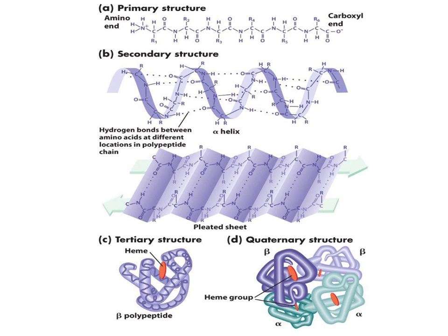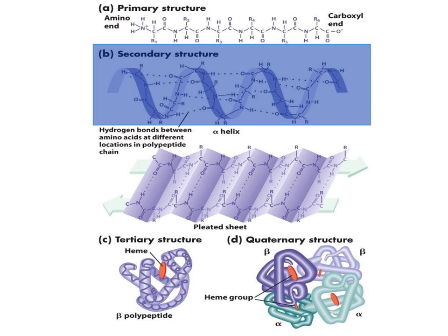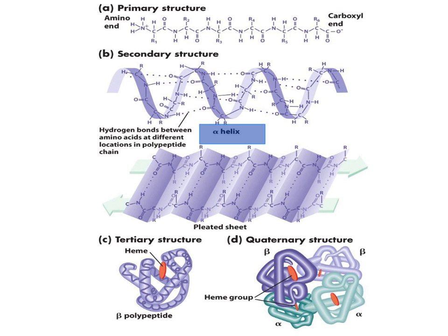As a protein molecule gets longer and longer, it starts to bend and fold and twist on itself and forms the secondary level of protein structure. There is more than one type of secondary protein structure, but the only one you will need to know for this course is the alpha helix, and it is held together by hydrogen bonds.